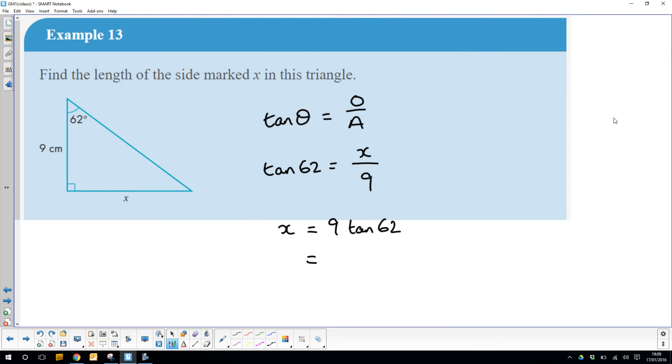And I get 16.9 centimeters to three significant figures. I'm just going to do a quick check. Yeah, well yes, 62 degrees - I ask myself what would the length of x be if that angle was 45 degrees? Well, that would make it 9. So bigger than 45 degrees means that x should be bigger than 9, and this is 16.9.